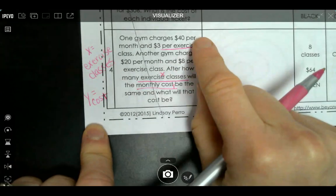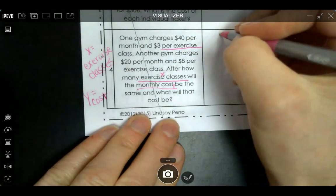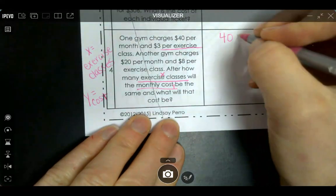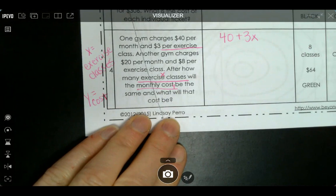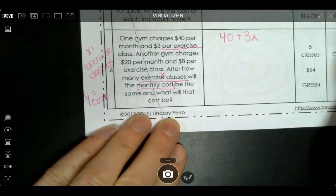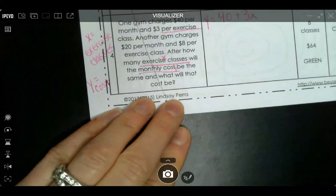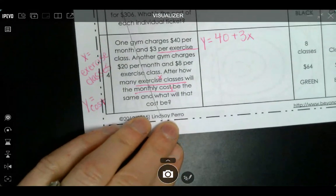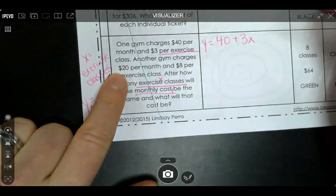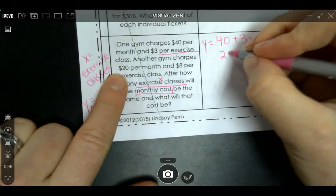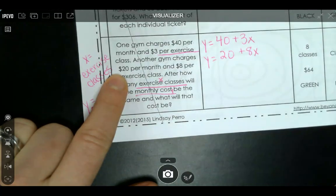We'll do the first gym. One gym charges $40 a month, $40 a month, plus the $3 per exercise class. So this is cost equals, so we're going to actually say y equals 40 plus 3x. The second gym is $20 per month, so $20 for the monthly charge plus $8 per exercise class, so y equals 20 plus 8x.